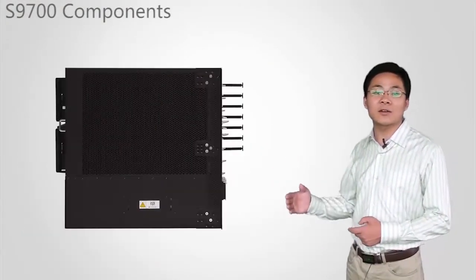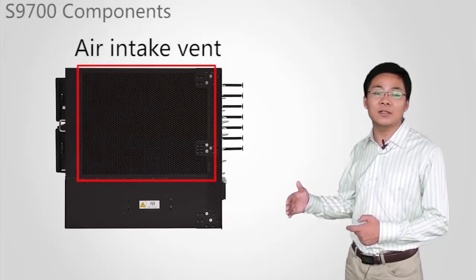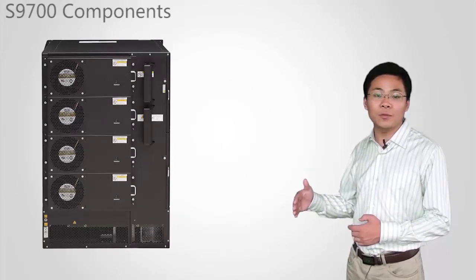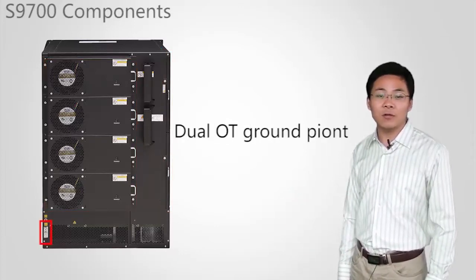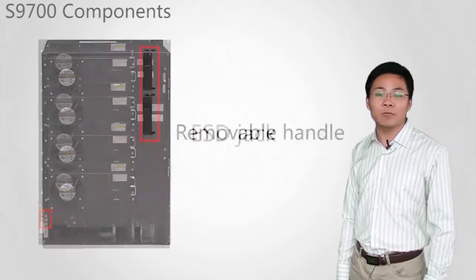On the left side, there is the air intake vent and removable handle. From the rear view, we can see the fan frame, air filter, dual OT ground points, ESD jack, and removable handle.